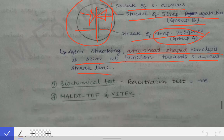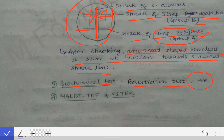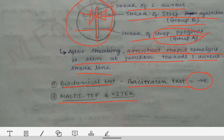Biochemical tests can also be used. The bacitracin susceptibility test shows that Group A streptococci are susceptible to bacitracin, while all others are resistant. Since Streptococcus agalactiae is Group B, it is resistant to bacitracin. Additionally, other biochemical tests such as CAMP factor and related tests can be used for diagnosis of Streptococcus agalactiae.